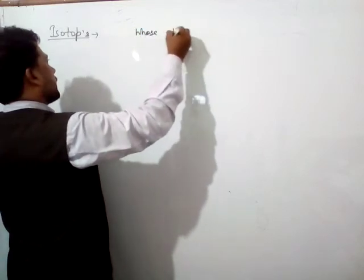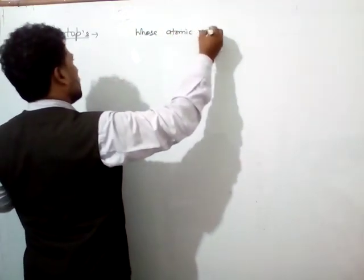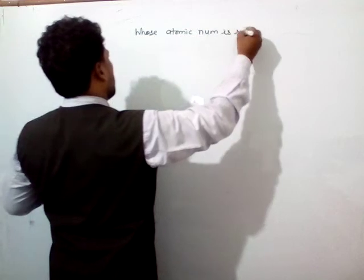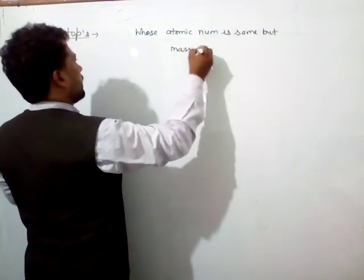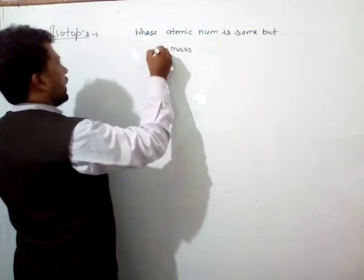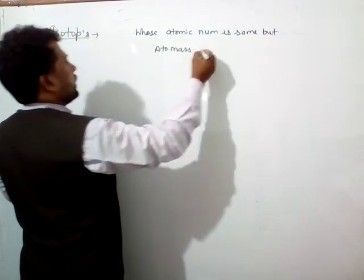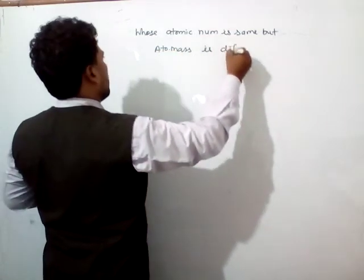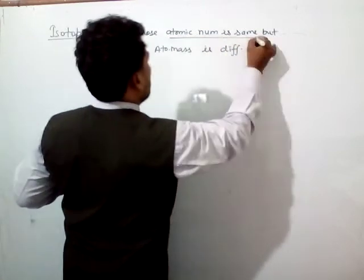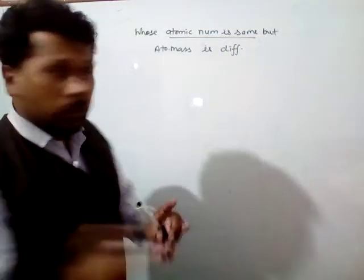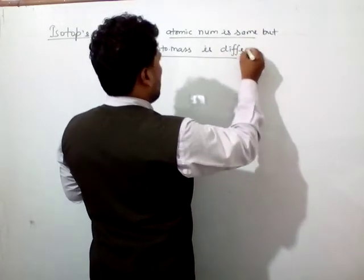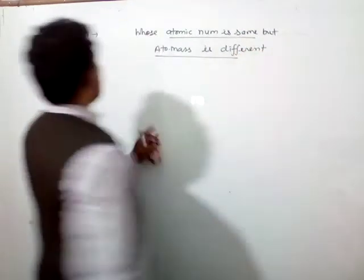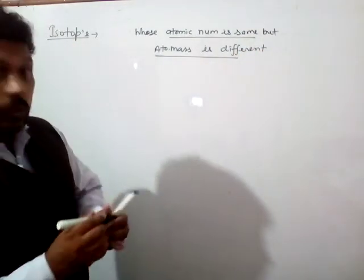Atomic number is different or atomic mass is different. Just remember this: atomic number same, mass number or atomic mass different - that are known as isotopes.